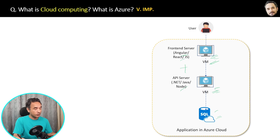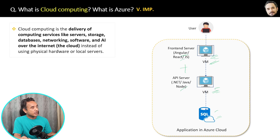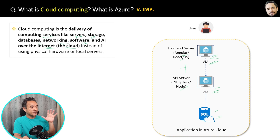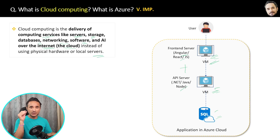Let's conclude the definitions. First, what is cloud computing? Cloud computing is the delivery of computing services — like servers, storage, database, networking, and software — over the internet. We call it cloud, instead of using physical hardware or local servers.